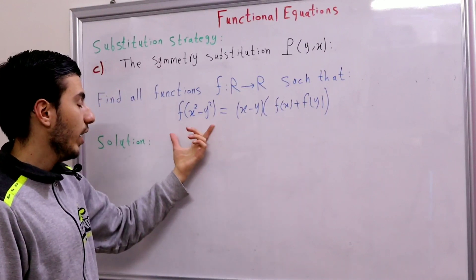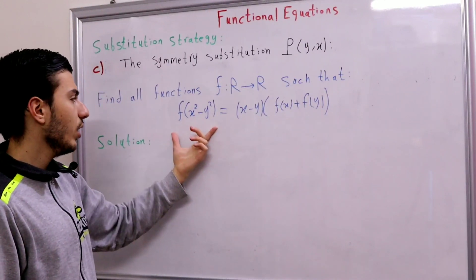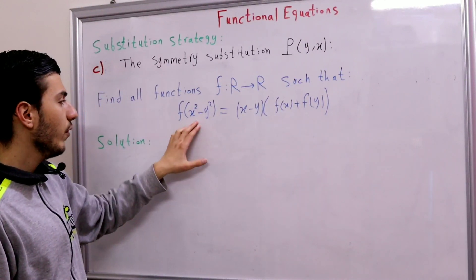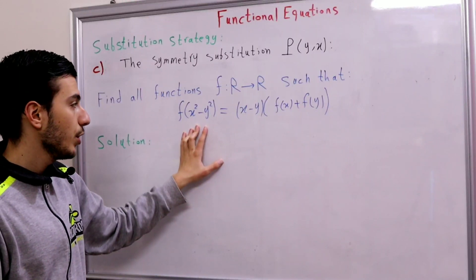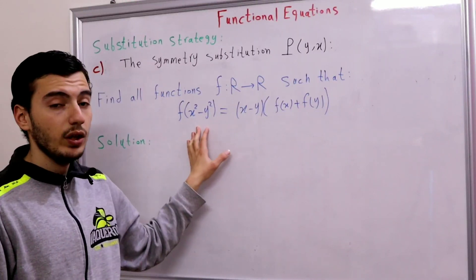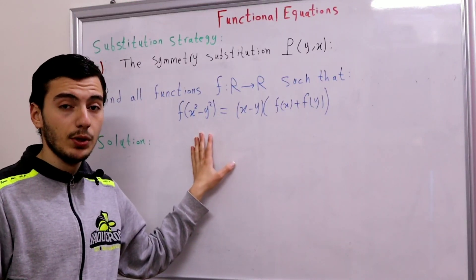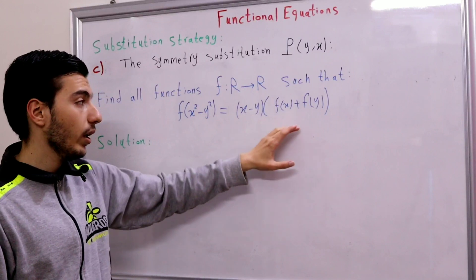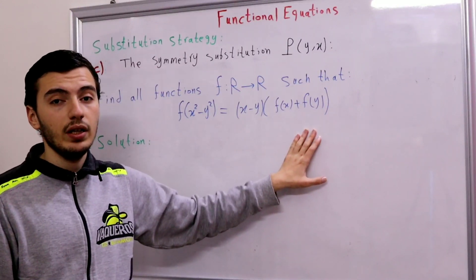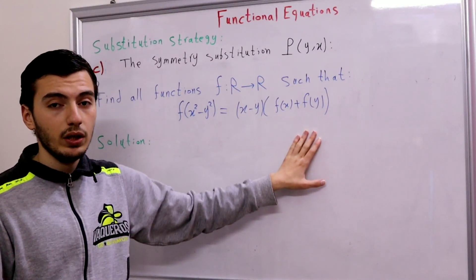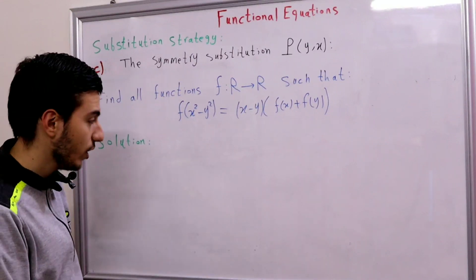So the new right-hand side will be the negative of the original right-hand side. What about the left-hand side? The left-hand side will become f(y² - x²). So if we substitute x with y and y with x, we will get a nice-looking functional equation.